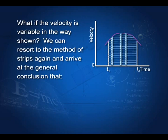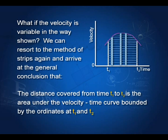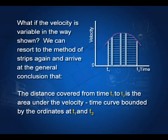If the velocity is changing non-uniformly, we take the same approach: draw strips covering the whole area under the curve, and find that the distance covered equals the area under the curve from time t₁ to time t₂. The area of each strip is v × dt, so the whole area equals the area under the velocity-time curve bounded by the ordinates at t₁ and t₂.